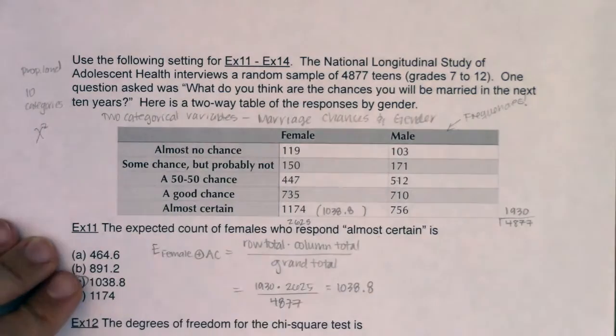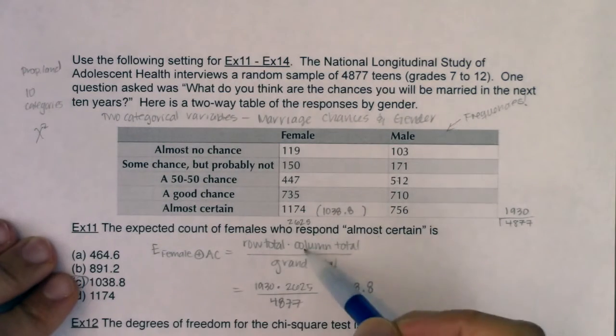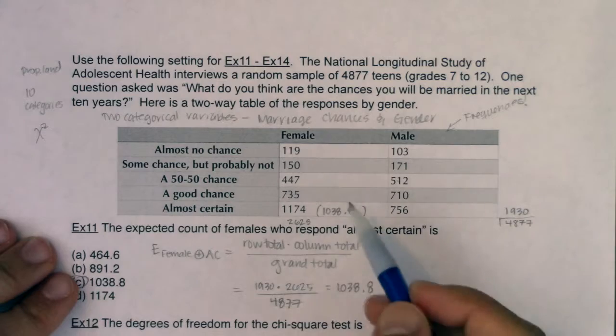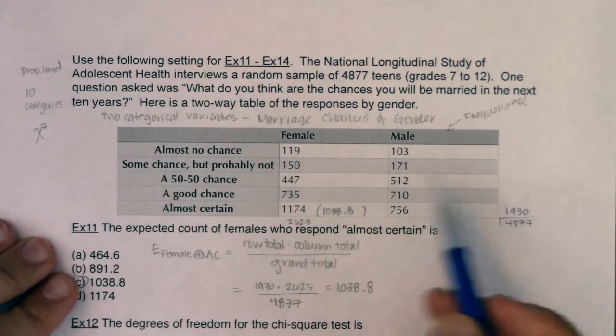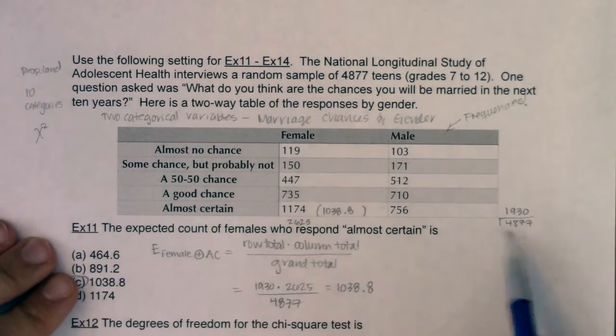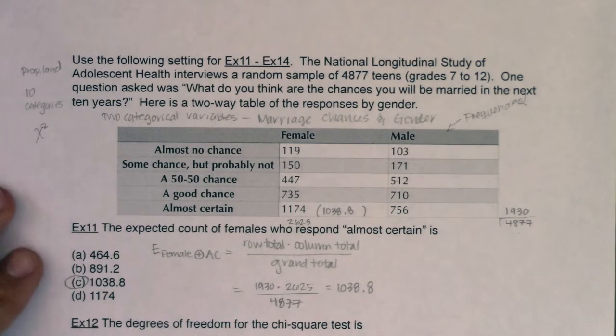So I don't know which one you feel is more efficient for you. For me personally, when I'm just doing one expected count, I don't really want to put everything into a matrix. I'll just do row total, column total over grand total. But you have an option, whichever one you feel more comfortable with.